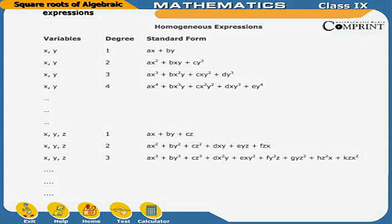For variables x, y, z of degree 2, the standard form is ax² + by² + cz² + dxy + eyz + fzx. For degree 3, the standard form is ax³ + by³ + cz³ + dx²y + exy² + fy²z + gyz² + hz²x + kzx² and so on.